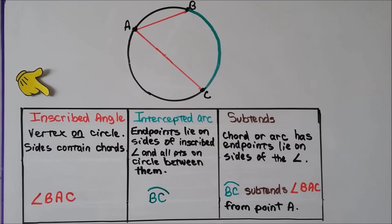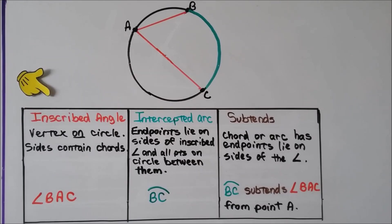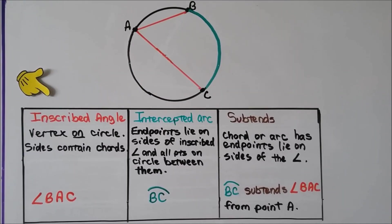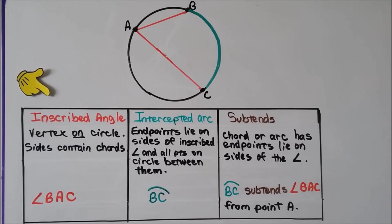For your notes: the inscribed angle has a vertex on the circle and its sides contain chords. Our inscribed angle is angle BAC. The intercepted arc has its endpoints on the sides of the inscribed angle and includes all points on the circle between them — so arc BC is the intercepted arc. For subtends, a chord or arc has endpoints that lie on the sides of the angle, so arc BC subtends angle BAC from point A.